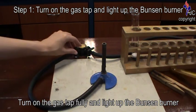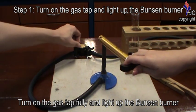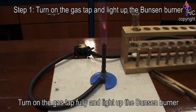Turn on the gas tab fully and light up the Bunsen burner by placing the tip of the lighter perpendicularly to the barrel of the Bunsen burner.